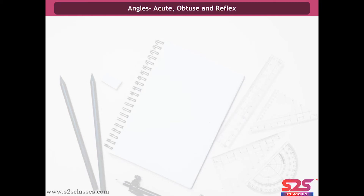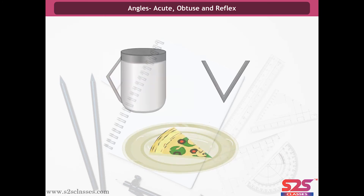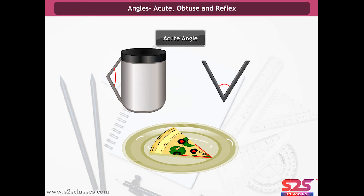Angles: Acute, Obtuse and Reflex. Let us first make a right angle tester. Take a piece of paper and fold it as shown in the animation. The right angle tester is now ready. Observe these figures — all of these form an angle. Let us compare these angles using the right angle tester. We see that each of the angles formed is smaller than a right angle. Such angles are called acute angles.